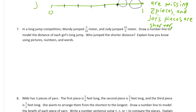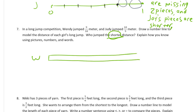In a long jump competition, Wendy jumped nine-tenths of a meter and Judy jumped ten-ninths of a meter. Draw a number line to model the distance of each girl's long jump. Who jumped the shorter distance? We don't have to make a number line specifically — we can draw tape diagrams. Wendy needs tenths.